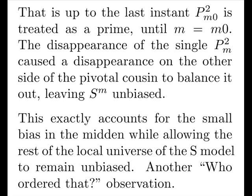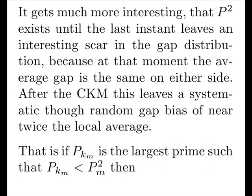Another who ordered this observation? It gets much more interesting that p squared exists until the last instant leaves an interesting scar in the gap distribution because at that moment, the average gap is the same on either side of the anchor. After the composite killing machine, this will leave a systematic scar, though random, gap bias of near twice the local average.